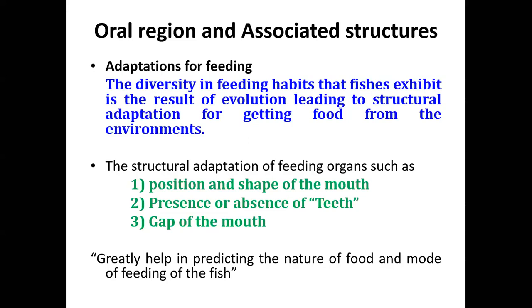If we are culturing fish in a man-made system — whether a pond or reservoir — and we don't know the feeding habit of the fish, then what are we going to feed? If you don't know whether a fish is carnivorous, where the protein demand is high, or herbivorous, or a plankton feeder, or feeds on detritus, then how will you feed them? That is why you need to know the feeding habit. To predict the feeding habit of a particular species, we always look at the oral region and the structures associated with it.